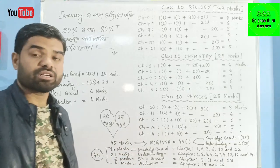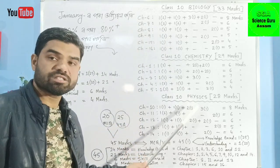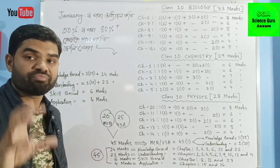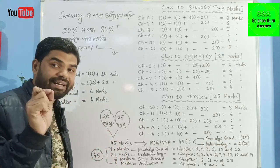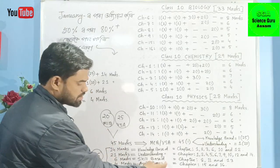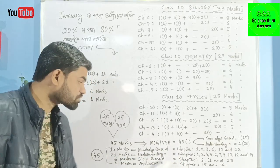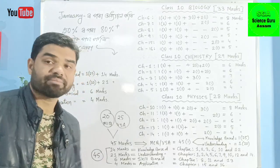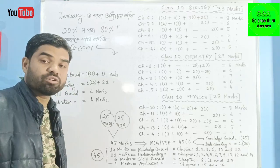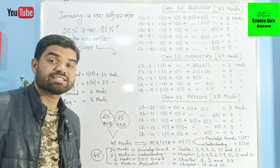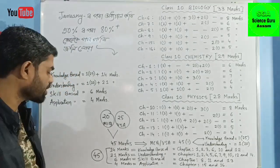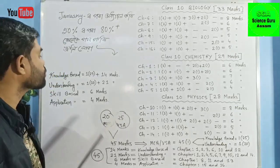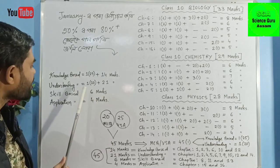After Biology, you'll study Chemistry and Physics. For skill-based questions, focus on chapters 8, 11, and 13. For application-based, chapters 15 and 16. The MCQ and VSA type questions total 45 marks.